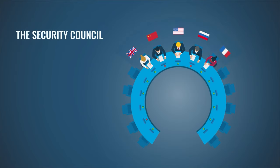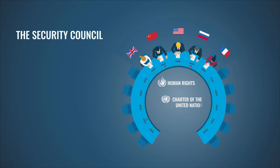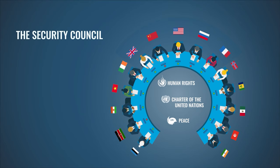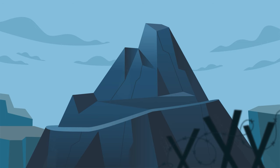The most powerful organ of the UN is the Security Council. It's in charge of maintaining peace and security between nations. The Council has 15 members, five of which are permanent, and the remaining 10 members are elected for two-year terms.